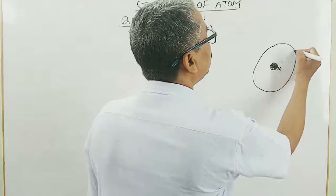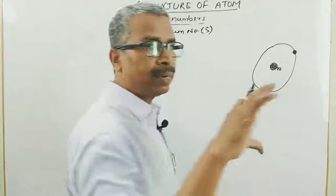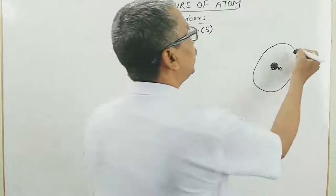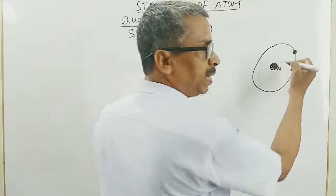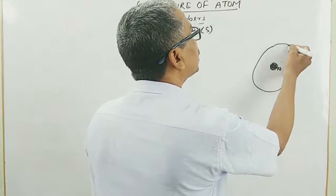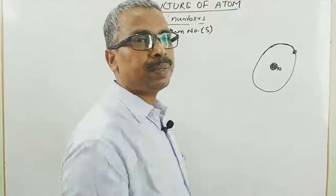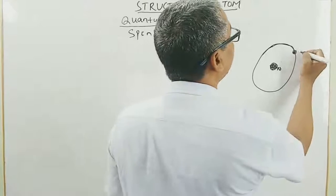Yanni jaise hai, yeh jo electron ghoom raha hai, jaise cricket ball mein dalte, spin ball dalte hai. Yeh apne charo taraf ka iska spin hai. Uske saath saath yeh iske charo taraf bhi jo ghoomta hai, uske saath bhi spin hai. So it acts as a tiny magnet.